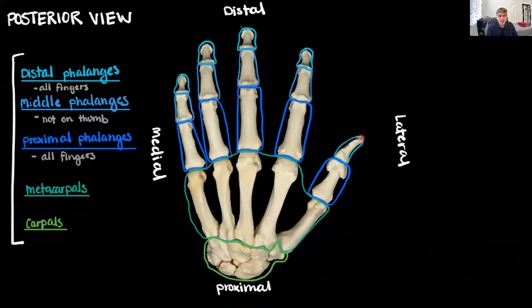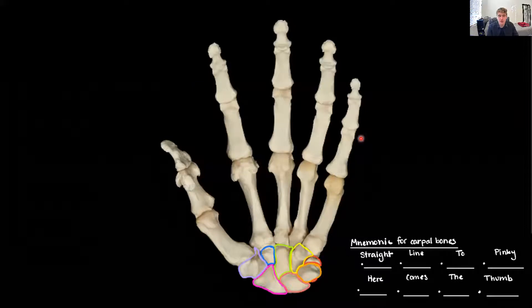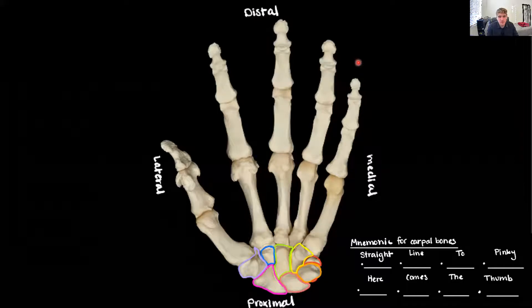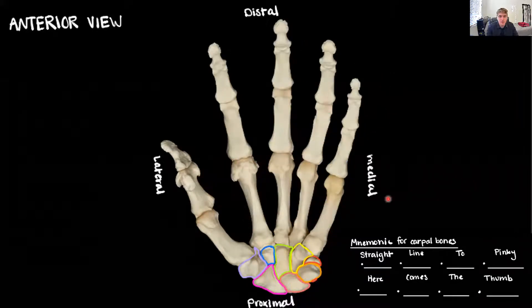Now let's move on to another view of the hand and look more specifically at the bones in the carpal region. Whenever we get a new picture we want to orient it. We can see the thumb, which is lateral, so the other side is medial. We see carpal bones, so those are proximal, with finger tips being distal. This is going to be an anterior view — I know this because of how the hand curves, and also because there's a bone highlighted in orange that can only be seen from an anterior view.